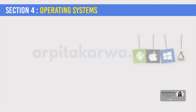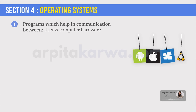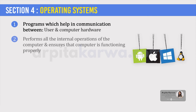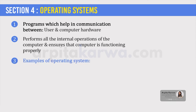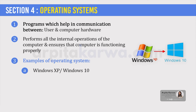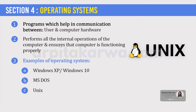The operating system includes those programs which help in communicating between the user and the computer hardware. It performs all the internal operations of the computer, like disk access, memory management, task scheduling, and user interfacing. It also ensures the systematic and proper functioning of a computer system — it ensures how your computer is working correctly. Examples of operating systems are Windows XP, Windows 10, MS-DOS, UNIX, Linux, etc.